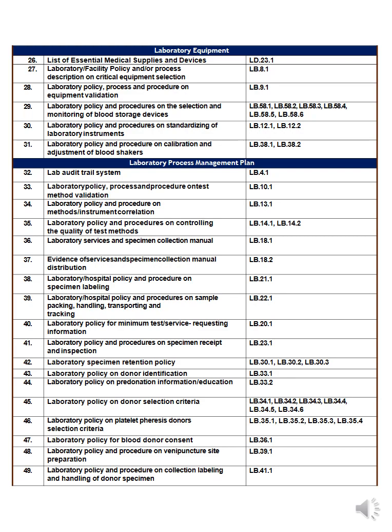Number thirty-five is the laboratory policy and procedure on controlling the quality of the test method. Number thirty-six is the laboratory service and specimen collection manual. You must have a manual covering the specimen from its preparation inside the OR or any department, through receipt at the lab, to delivering the result to the concerned department. Number thirty-seven is evidence of service and specimen collection manual distribution to all lab staff and concerned personnel in other departments.